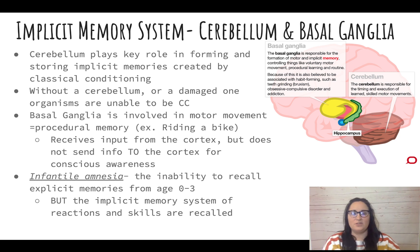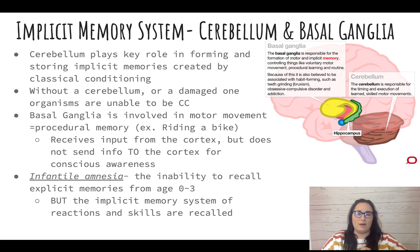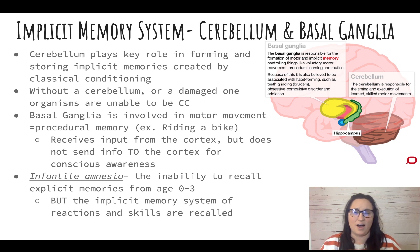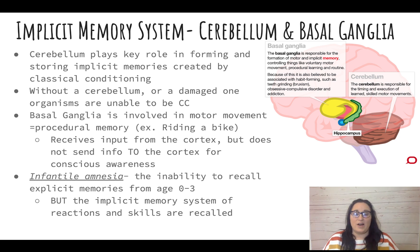The implicit memory system is our automatic memory. The two parts of the brain to know are the cerebellum and the basal ganglia. The cerebellum plays a key role because it's part of balance and coordination — those automatic behaviors we don't consciously put effort into. It also plays an important role in classical conditioning.